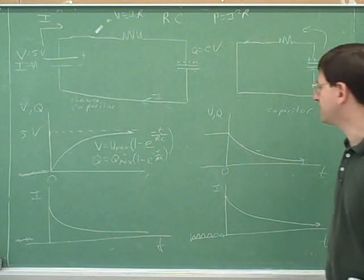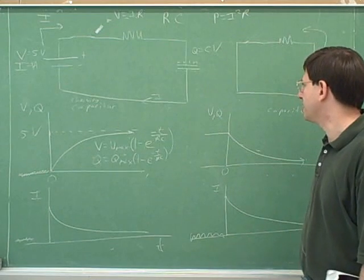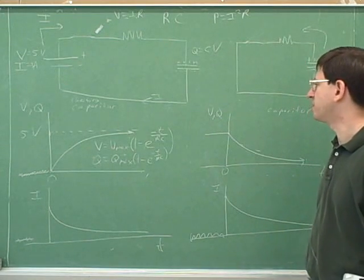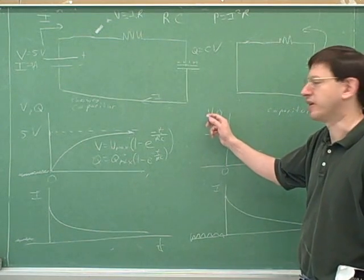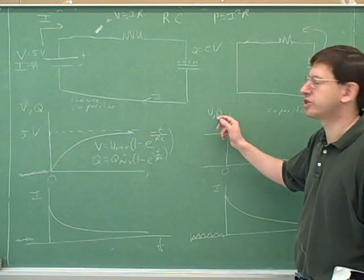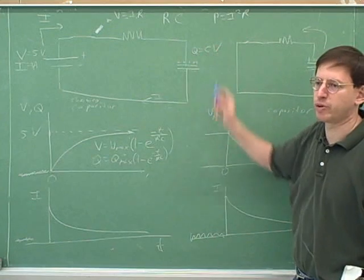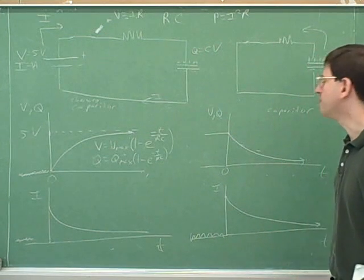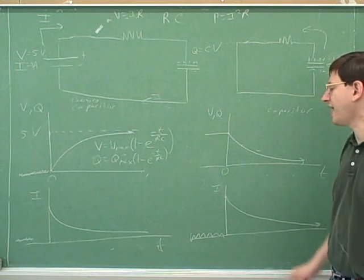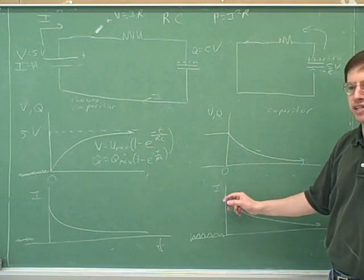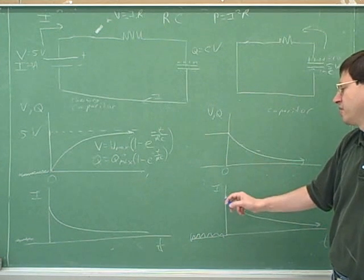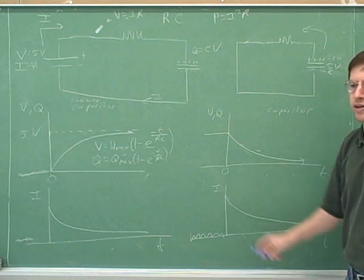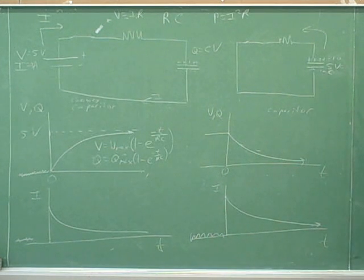The main lesson here is that the capacitor prevents jumps in voltage because it prevents jumps in charge, and these are proportional to each other. So that means it has to allow a jump in current. If we work out the logic, the only way to prevent voltage from jumping is to allow the current to jump.